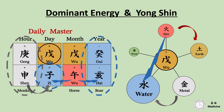It is true that the monthly energy takes a huge role out of 8 characters, because it directly indicates which month this person was born in. However, if other elements are dominant, those elements become dominant energy. And it is really important to see which element is generating which element, and which element is controlling which element. In this chart, water becomes dominant energy by the generating power of metal.